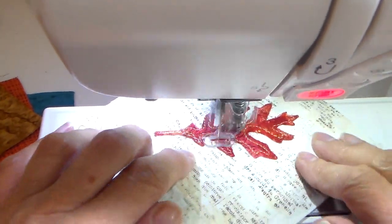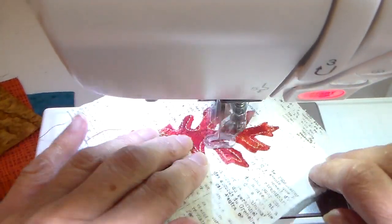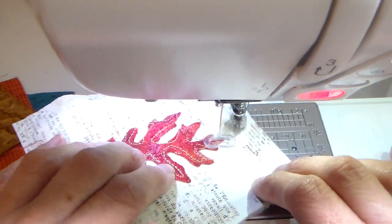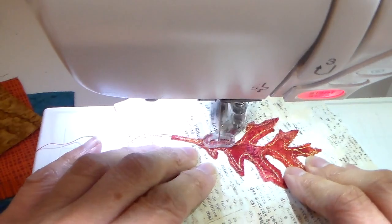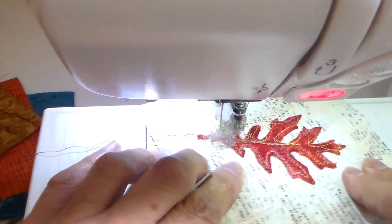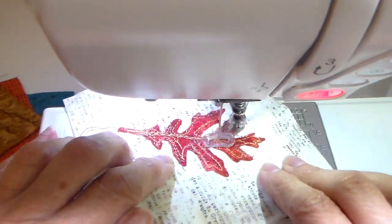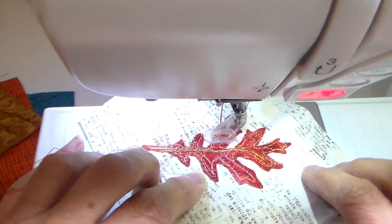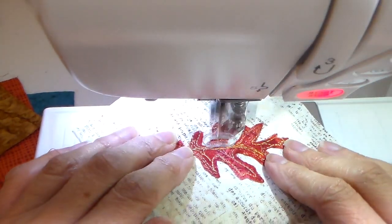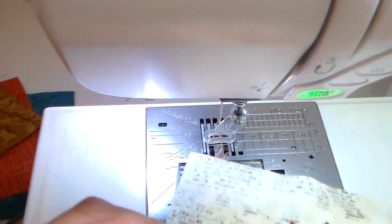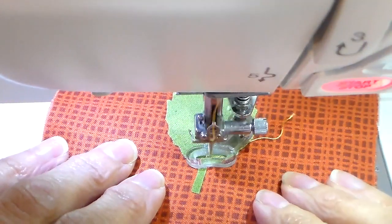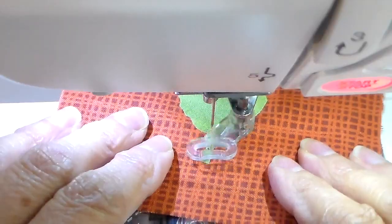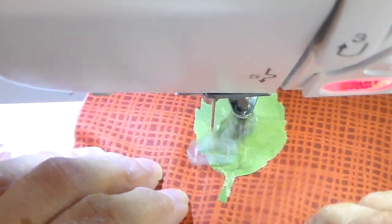I have my feed dogs dropped, have my free motion foot on, and I'm not being careful at all. I am going over this twice. I do like that messy kind of stitched-on look. And then I'm doing the veins and just adding some detail right on that leaf, doing a little back and forth motion when I start and end just to kind of tie that thread off. And then I just clip that thread.